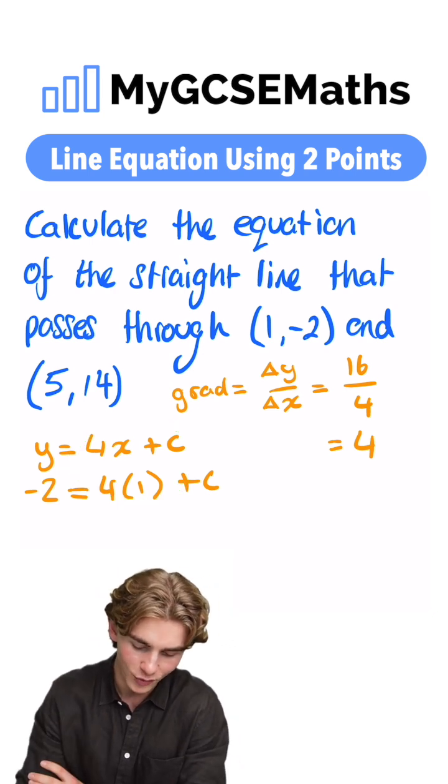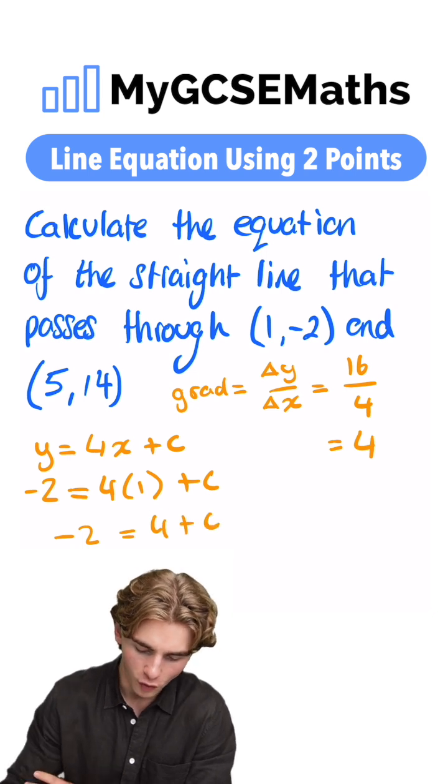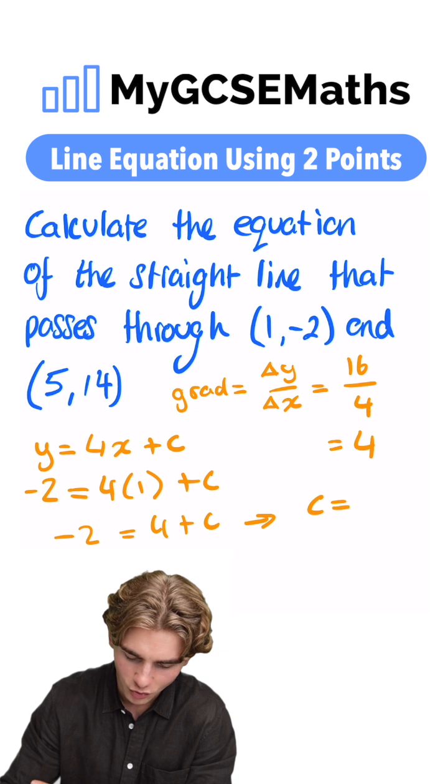We can solve this equation for c. We have -2 equals 4 plus c. Subtract 4 from both sides to get the c on its own. What are we going to get? We're going to get c equals -2 minus 4, which is -6.